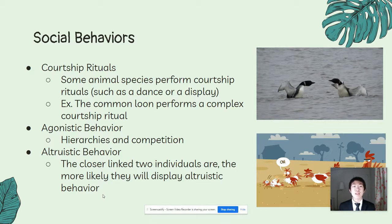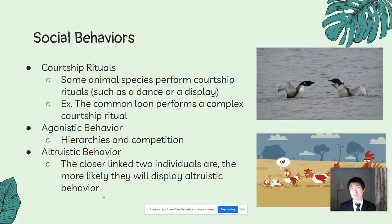And finally, altruistic behavior. Studies show that the closer linked two individuals are, the more likely they will display altruistic behaviors. Altruistic behaviors can include protecting one another from predators or telling their families that there is a food source nearby.